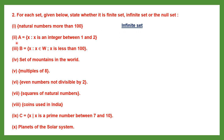Question 2: Set A equals X such that X is an integer between 1 and 2. Integers can be negative or positive, but between 1 and 2 there is no integer. So that set is going to be empty — set A is a null set.